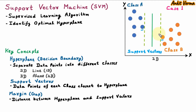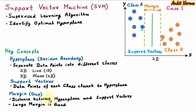In the diagram, these two are support vectors and this is the hyperplane. So the distance between them is called margin. This margin must be large so that we can easily separate class A with class B. So large margin is good and small margin is bad. We need to check multiple cases and in each case we have to find the margin. Wherever the margin is large, that will be considered as the optimal hyperplane.